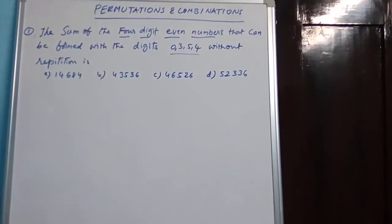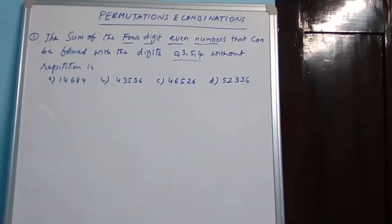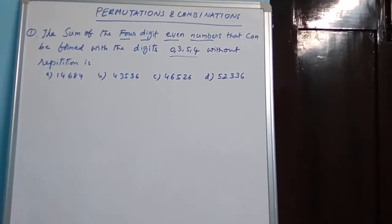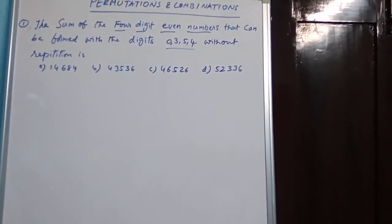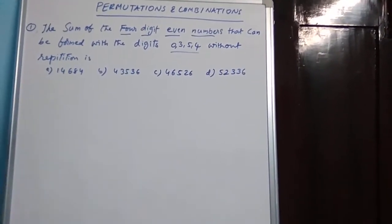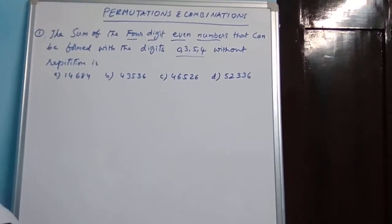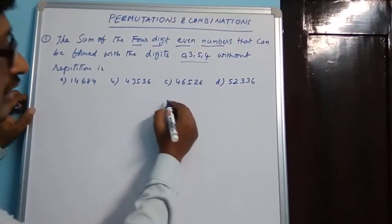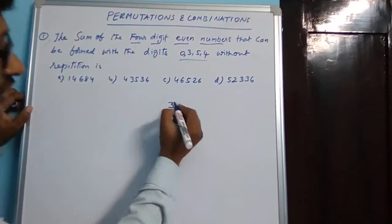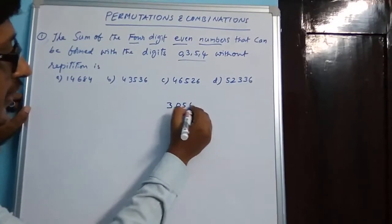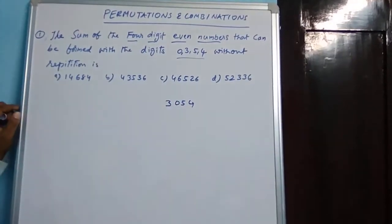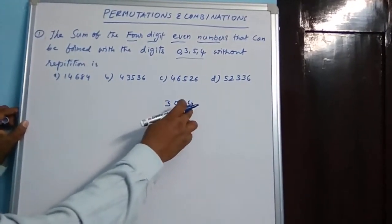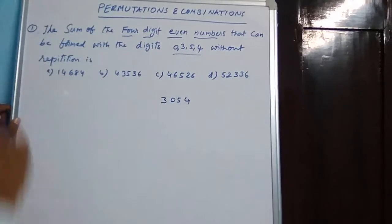The four-digit number cannot begin with 0 — that should not start with 0. So first we will see the number of four-digit even numbers that start with 3: for example 3, 0, 5, 4. So four-digit numbers that are also even numbers.